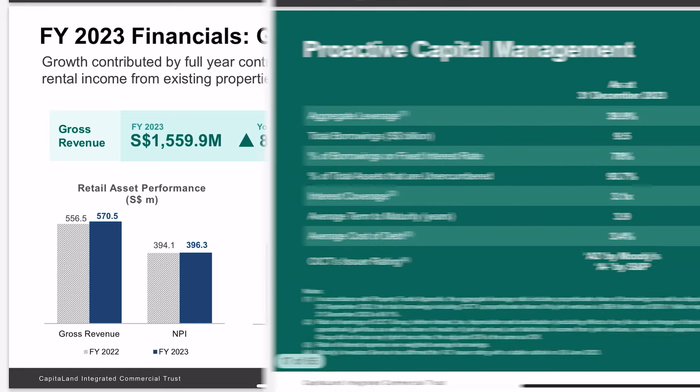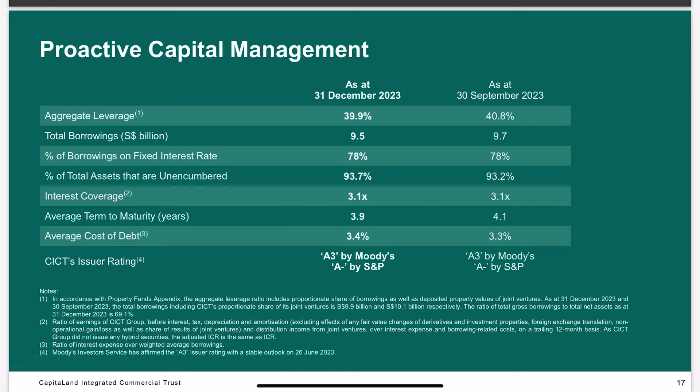Looking at their debt, the leverage ratio is on the higher side at 39.9 percent, while cost of debt is at 3.4 percent and the interest coverage ratio is 3.1 times. Although their leverage ratio is high, it is fine for two reasons. First, CICT is a large REIT, so the 10 percent gap to the regulatory limit represents a much larger absolute value compared to smaller REITs. Second, they have a very solid investment-grade rating from financial institutions, which means lenders are more willing to extend credit to them.